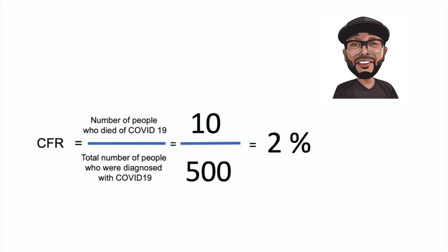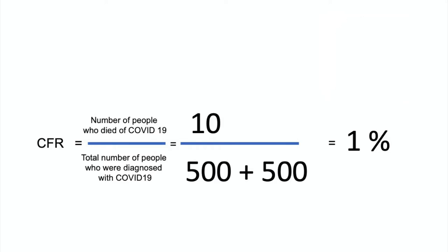But what if 500 more people actually were infected but had symptoms that were so mild that they went undiagnosed? In this situation, the more accurate case fatality rate would be 1%. This is a constant challenge for the public health sector to report on the latest and most realistic measures while recognizing that these estimates can change.